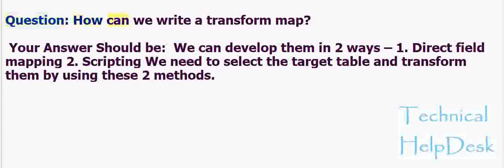Question: How can we write a transform map? Your answer should be: we can develop them in two ways — direct field mapping or scripting. We need to select the target table and transform data using these two methods.